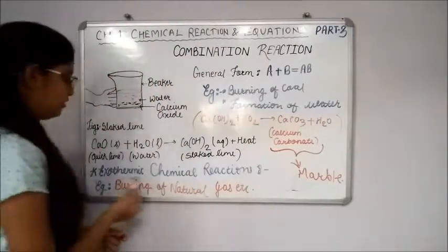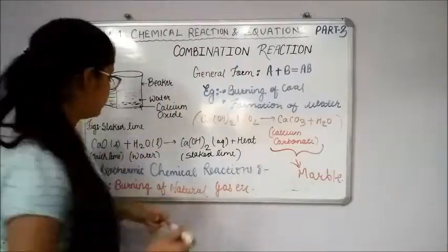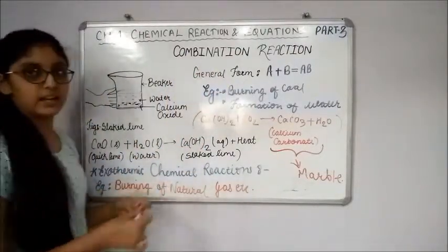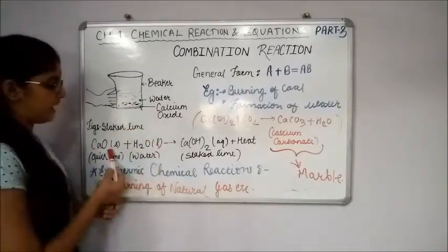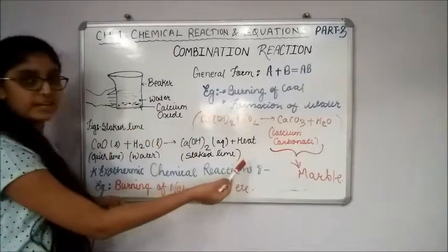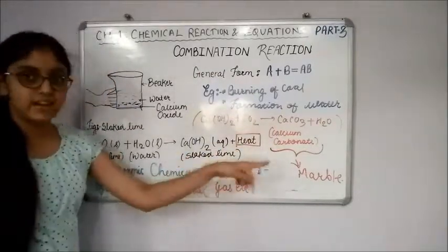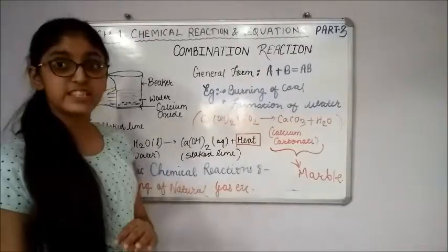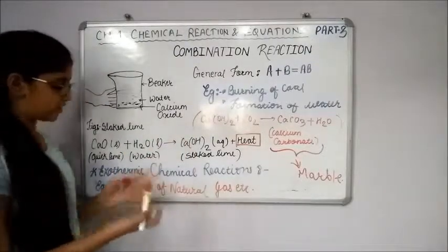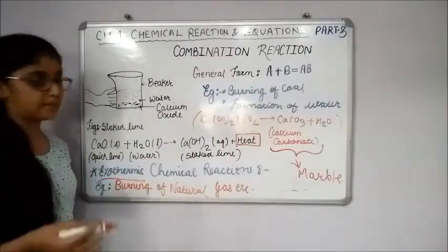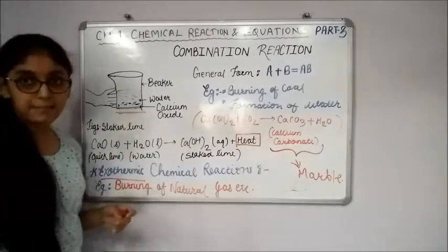Now we will learn about exothermic chemical reaction. That is a sub-reaction in the combination reaction. If you focused on the activity, we came to know that with this combination reaction heat was also being produced. Whenever within a reaction, if heat is also being produced with that reaction, then that reaction is known as exothermic reaction.